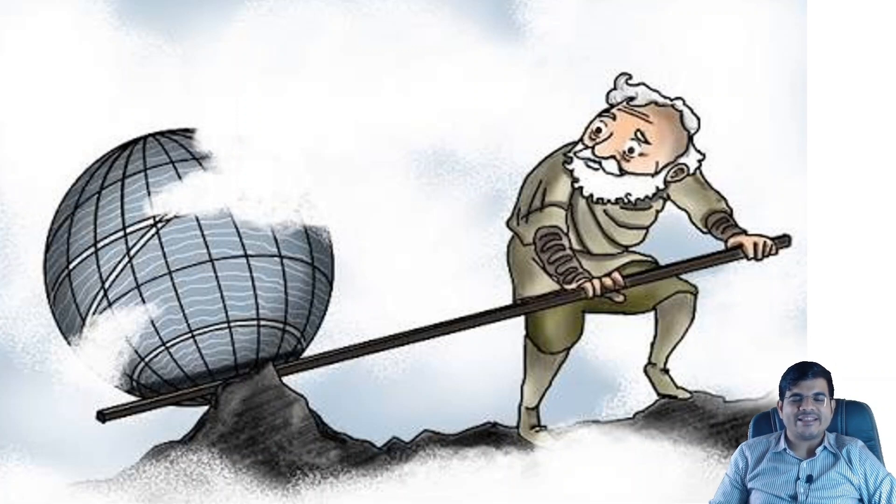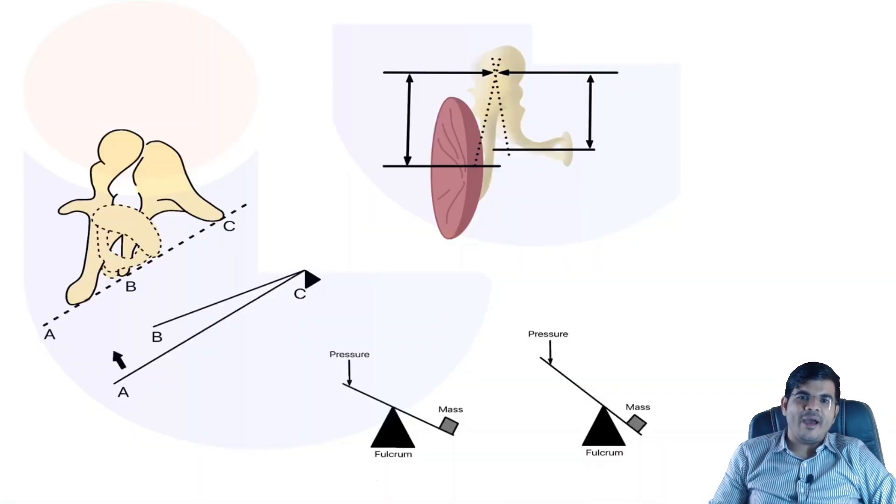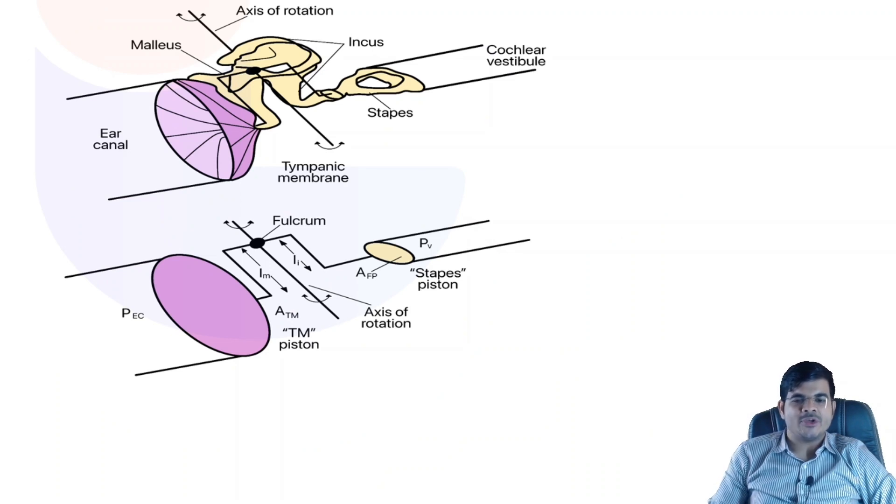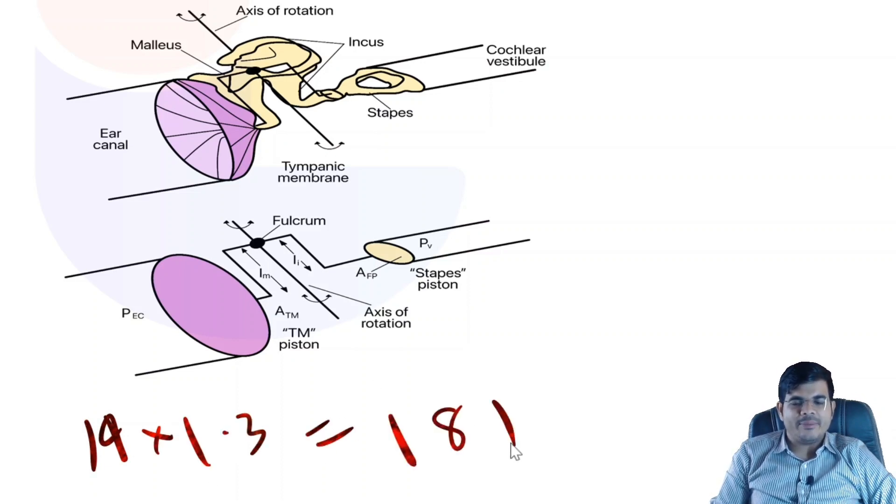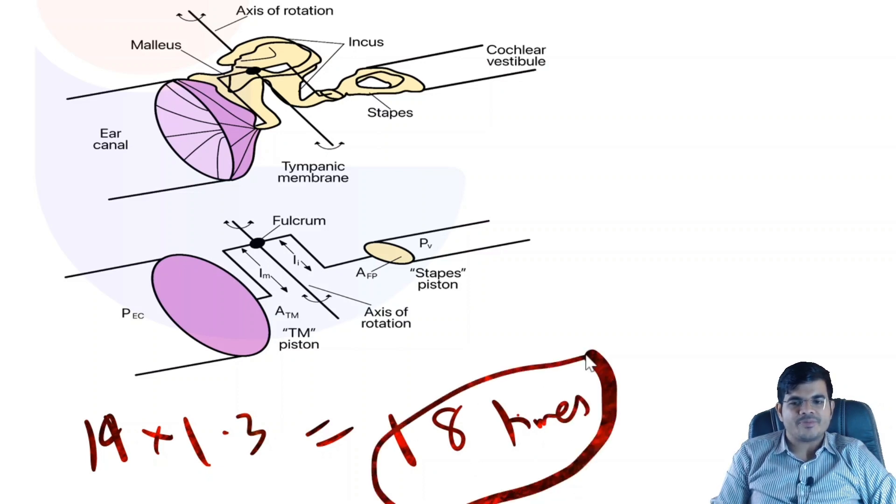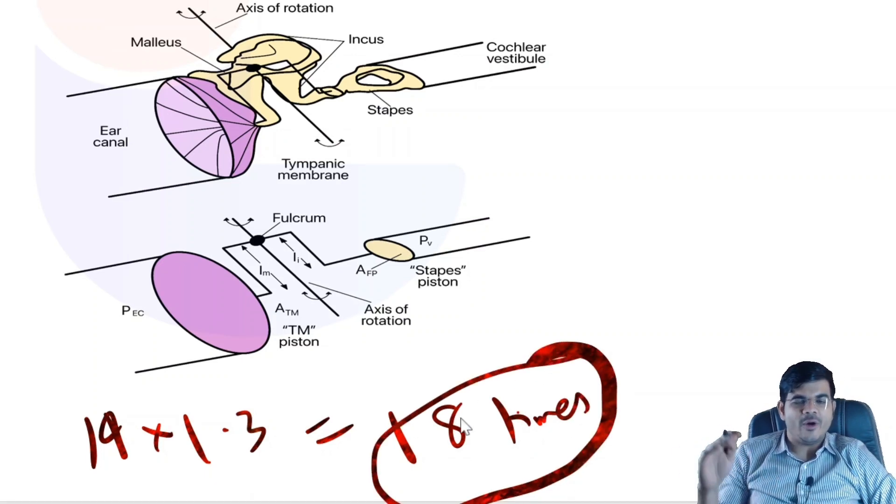This statement emphasizes the importance of lever action mechanism, and yes, lever action mechanism is also playing a great role in middle ear transformer mechanism. Handle of malleus is 1.3 times longer than that of the long process of incus. Hence, there is a lever advantage of 1.3 times. So totally you have 14 into 1.3, that is equal to 18 times advantage because of the lever action as well as hydraulic action.